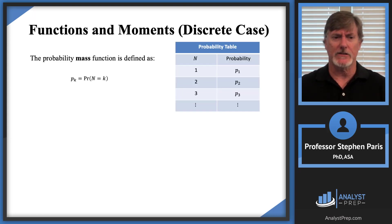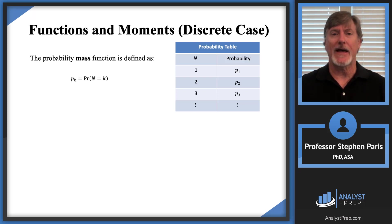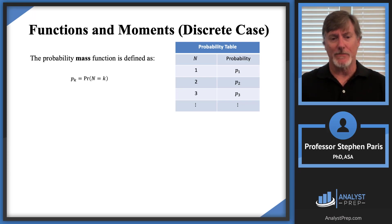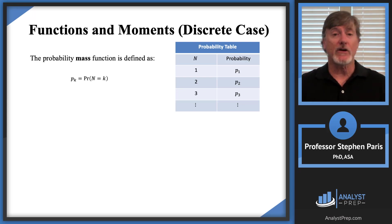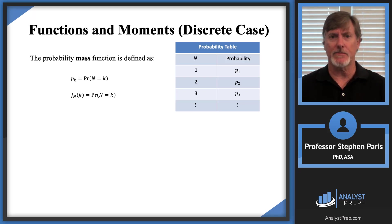Let's talk about the discrete case again first. In the discrete case, a discrete random variable just means you can list out the values in the random variable, and we had a probability mass function defined to be the point mass at each value. P sub K is just the probability that the random variable is equal to K, and we could also write this in function notation as F sub cap N of K being the probability that cap N equals K. So sometimes you'll see the P sub K notation, and sometimes you'll see the function notation.